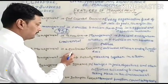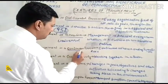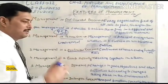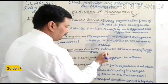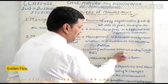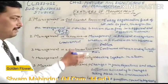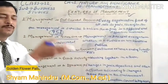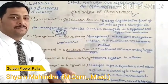The next feature is: management is a continuous process. Continuous means it is regular and never-ending. Management is a continuous or never-ending function. Once management starts in an organization, it will never end.